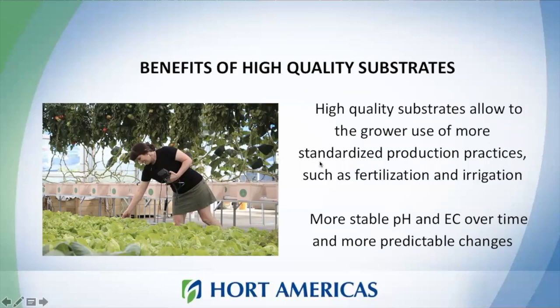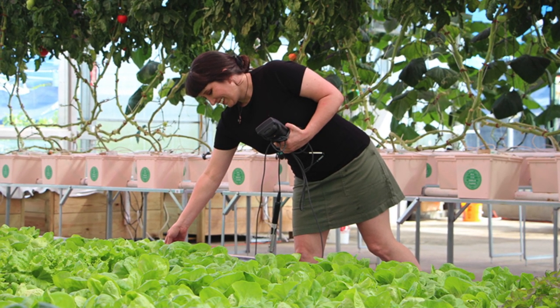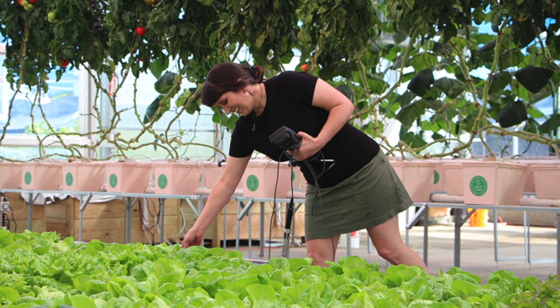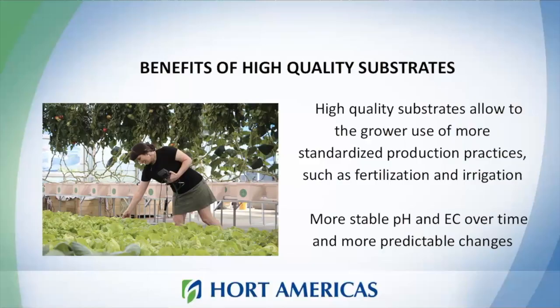So what are the benefits of applying all this information? If you have a good substrate — if you invest in a high quality substrate — your system will be more stable and you can use more standardized practices. You can calculate fertilization and irrigation more accurately and have more consistency in your results because the pH and EC levels will be more stable. It's a very good investment to get high quality substrates in your hydroponic production.